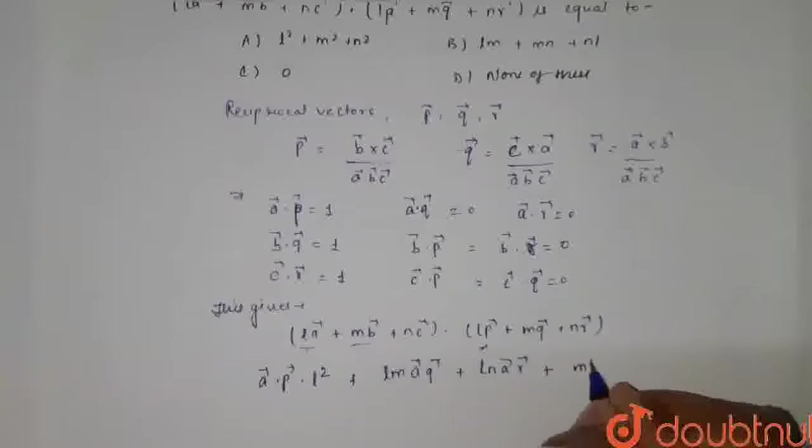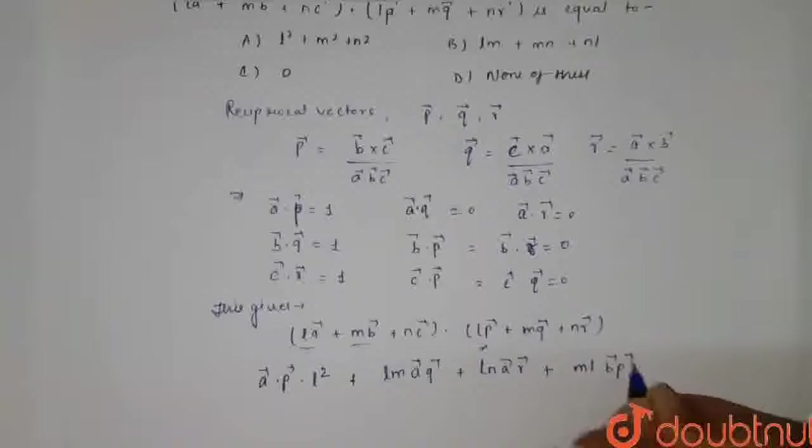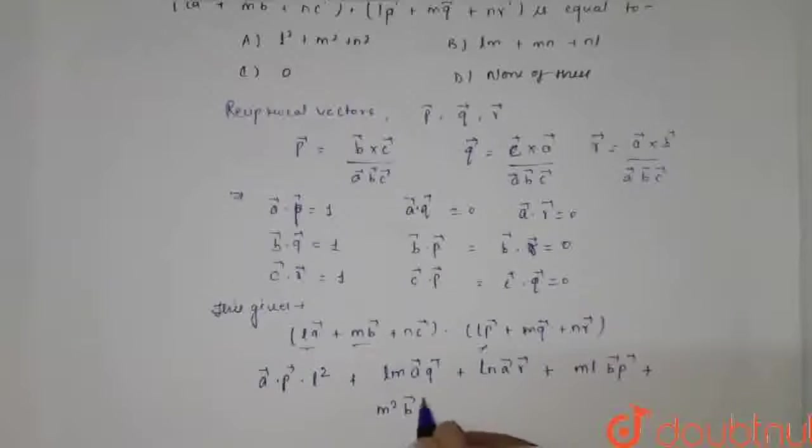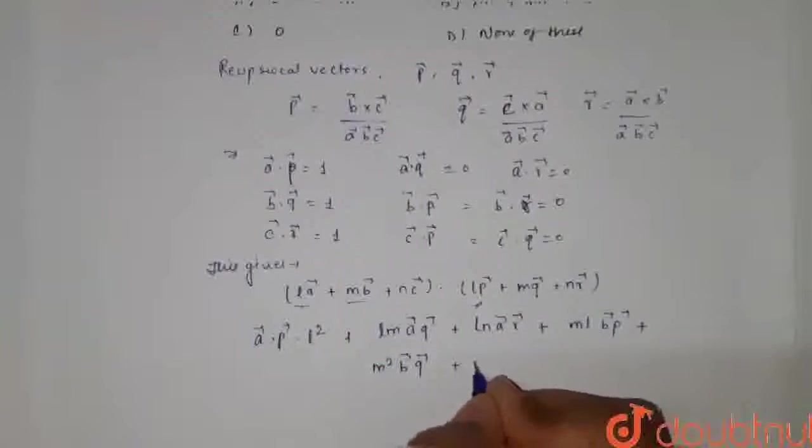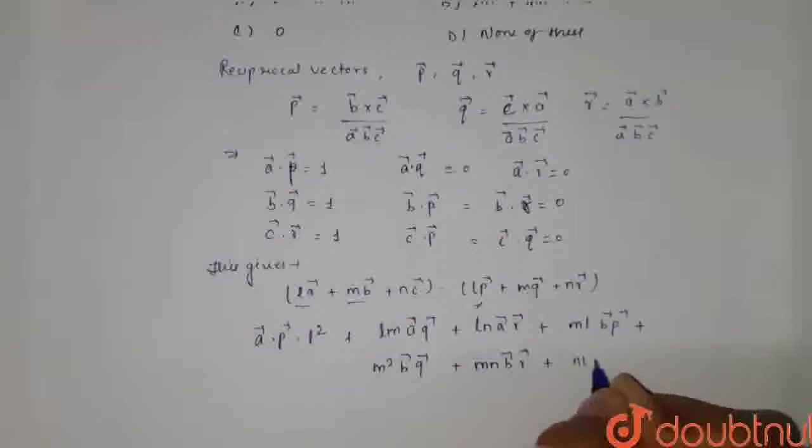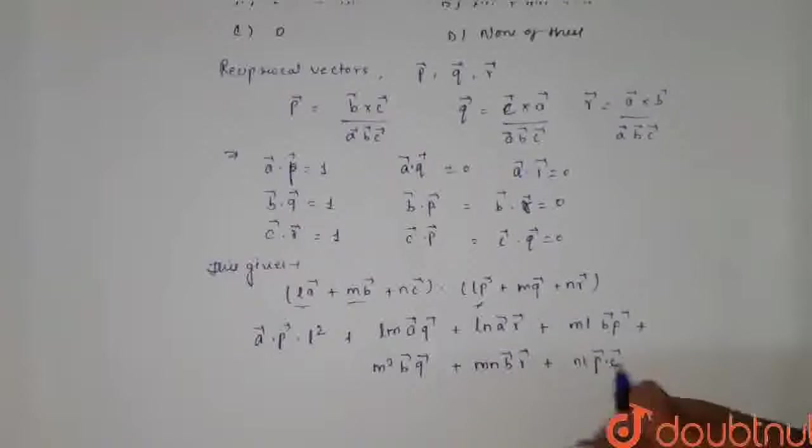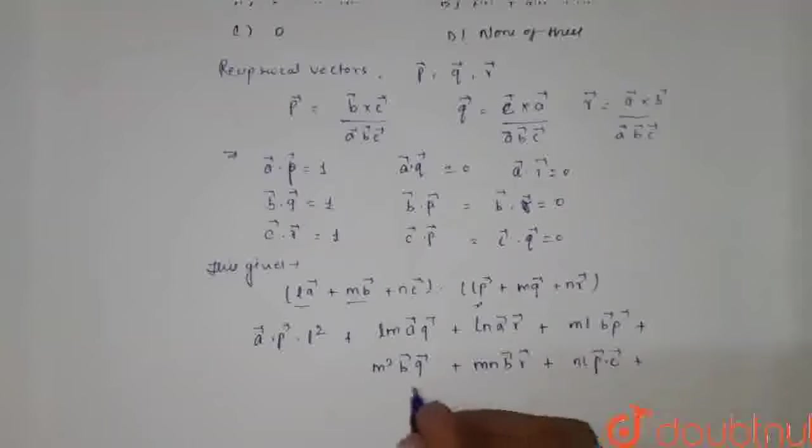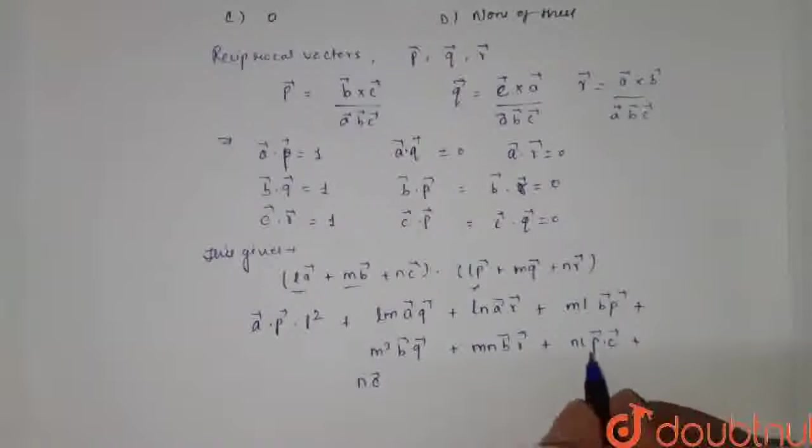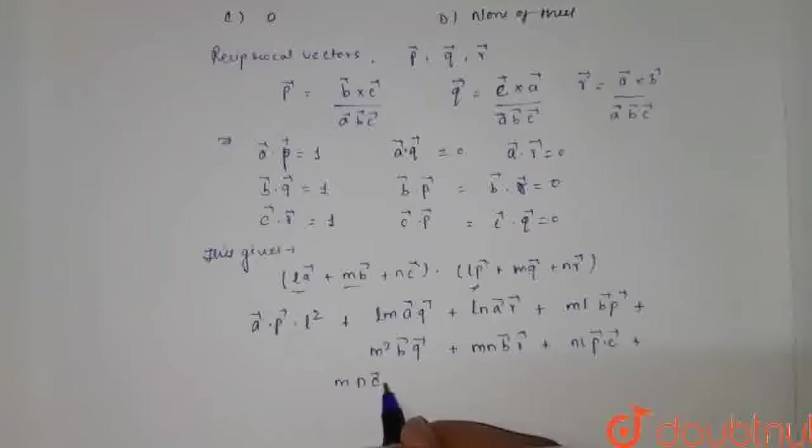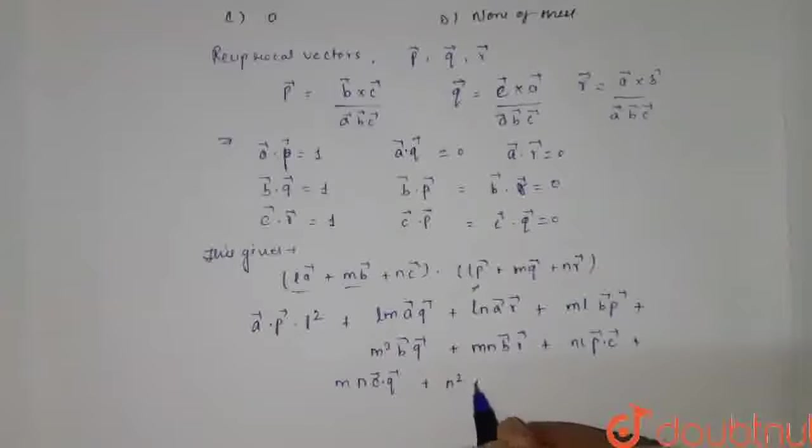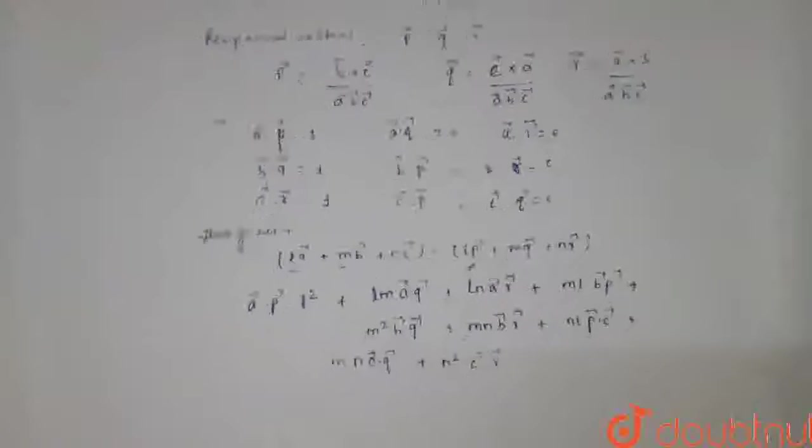Plus now this term M L B vector P vector plus M square B vector Q vector plus M N B vector R vector plus N L P vector C vector dot product plus N C vector, M into N C vector into Q dot product with Q vector plus N square into C vector dot R vector.